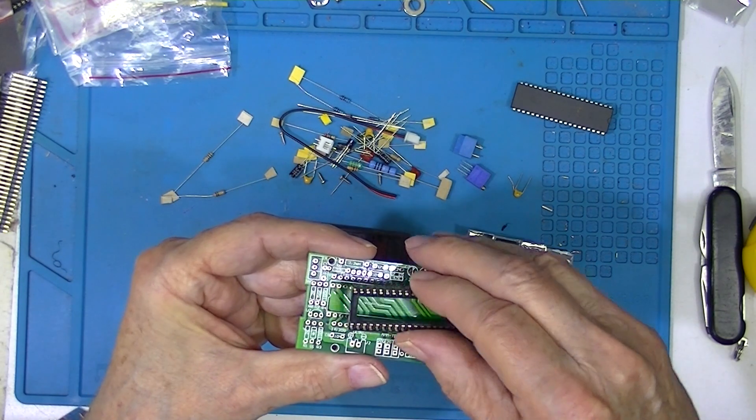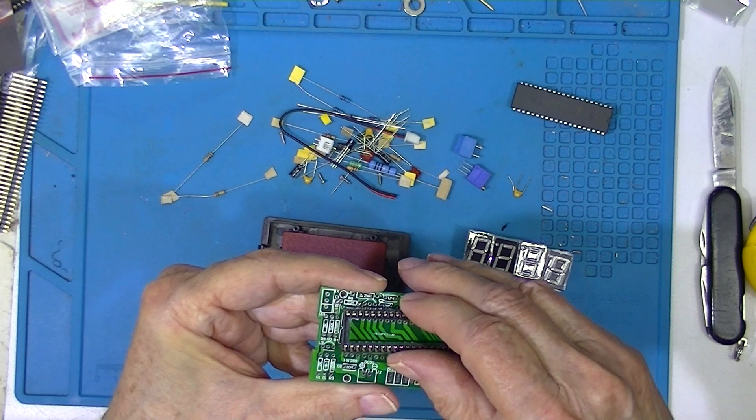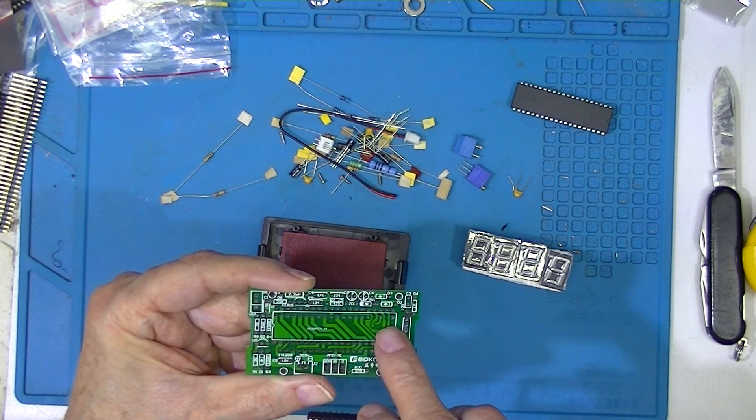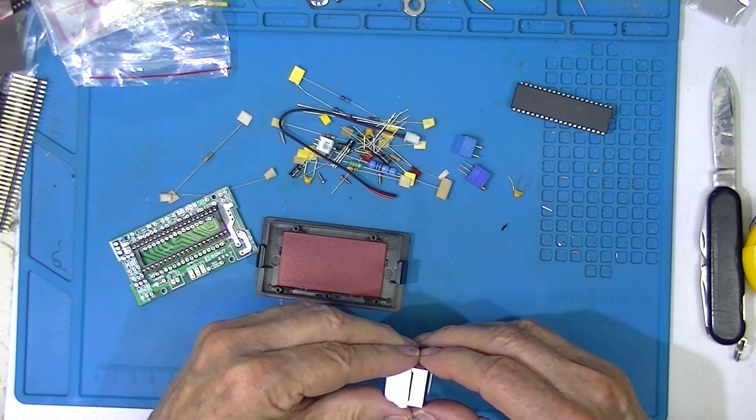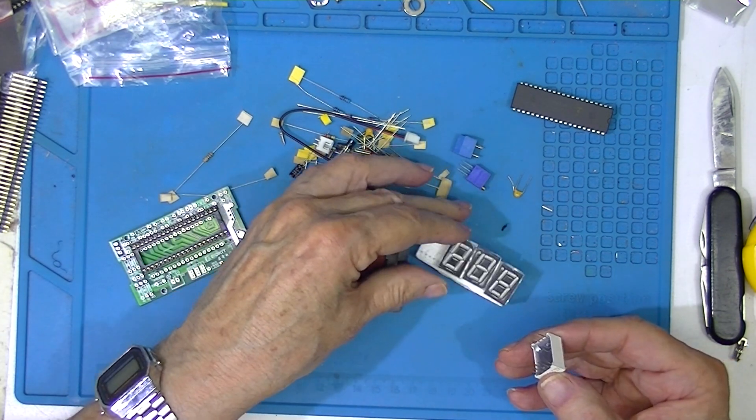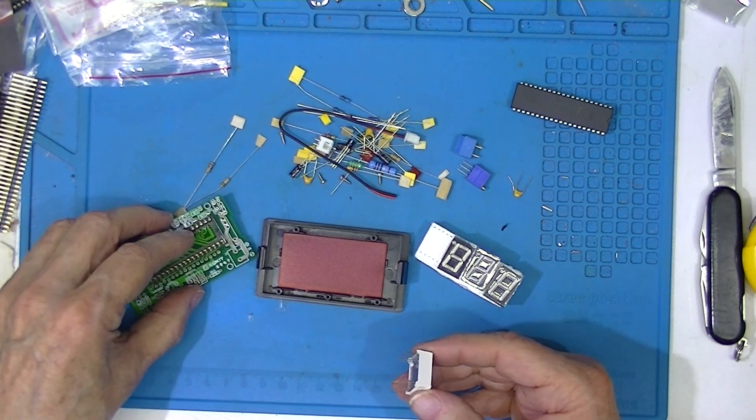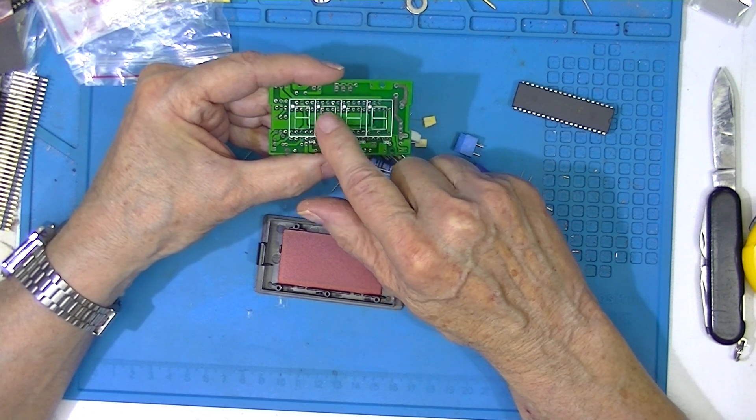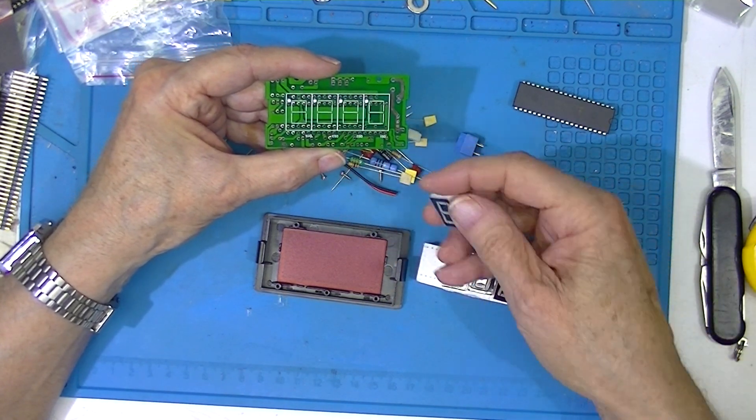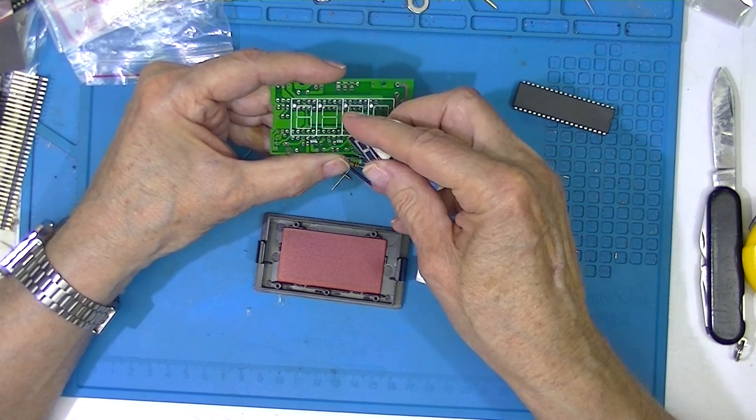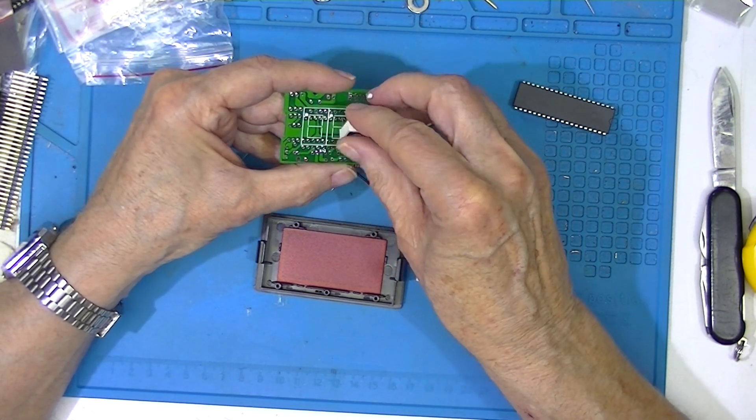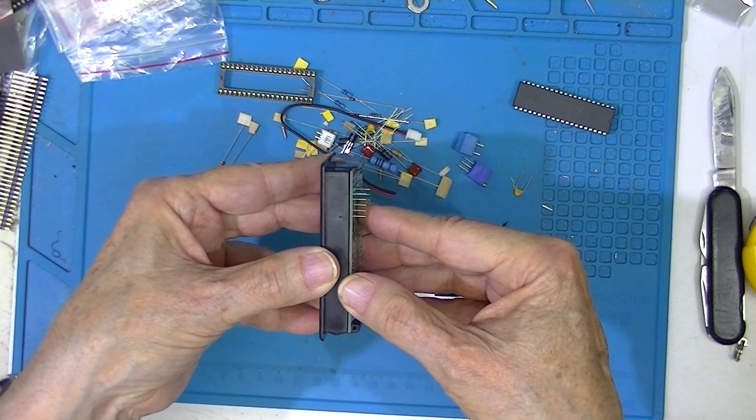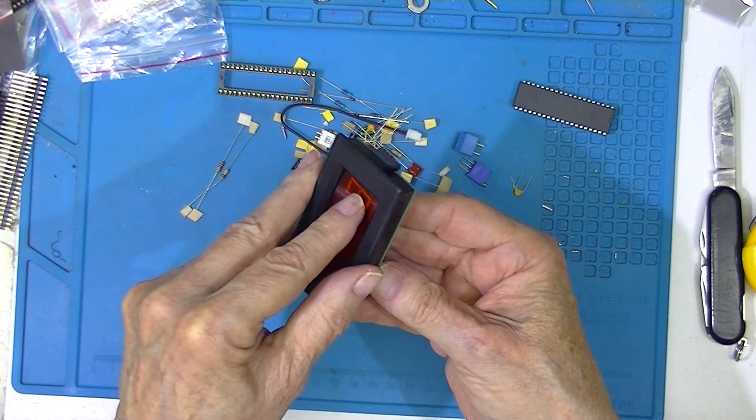However, the socket actually obscures this pin right here. This row of pins on the socket are obscured by the display. You see this bezel fits very tight, it's actually up against the plastic.